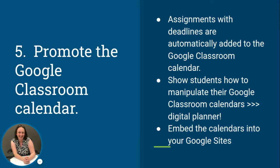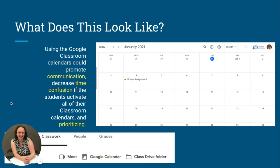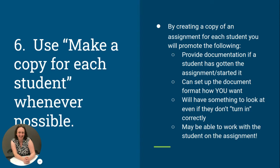A due date also means the assignment shows up in the classroom calendar. Your class has a classroom calendar and kids have access to it. Assignments with deadlines are automatically added to it — it's a digital planner for 2021. Show students how to use their Google Classroom calendar. You can also embed the calendars into your Google Sites, which our teachers are supposed to have. If you work your calendar right and embed it, parents can now see everything even if they're not a guardian.